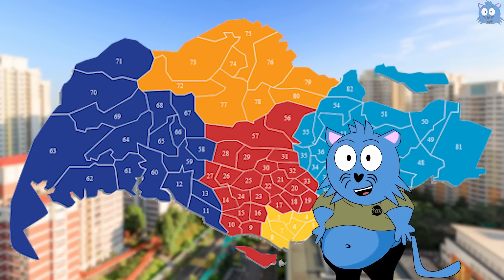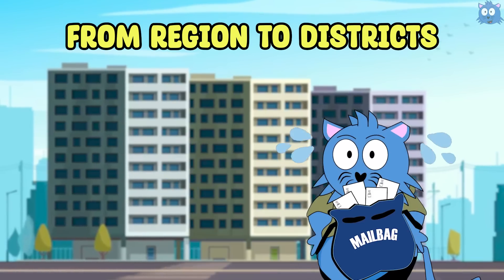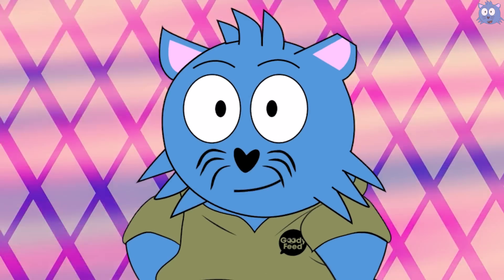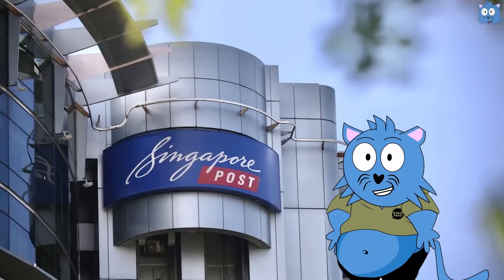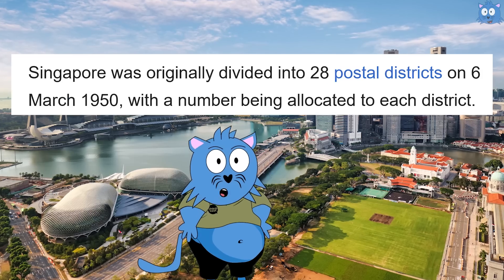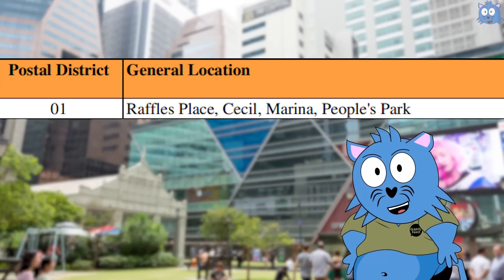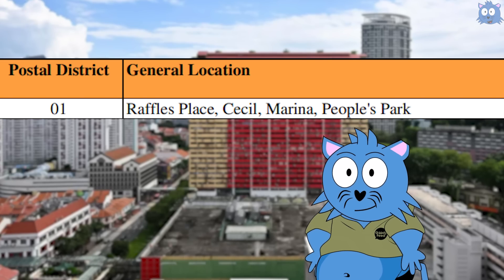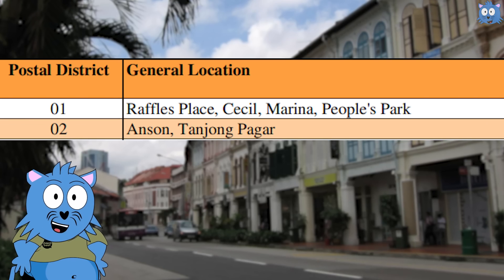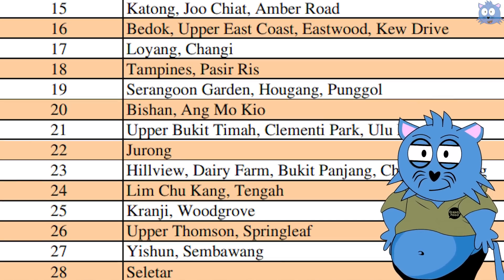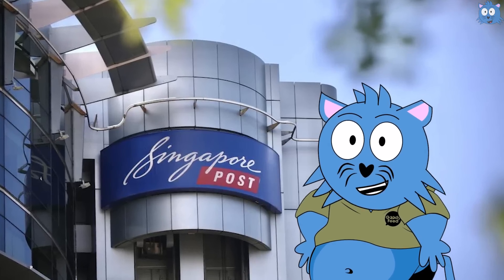Before you understand postal code, you need to understand the history behind it. Long long ago, back in 1950, to facilitate the postal service to send mail, Singapore was divided into 28 districts. District 1 is Raffles Place, Chinatown, Marina, and People's Park area. District 2 is Anson and Tanjong Pagar. It then goes all the way to District 28. This is done so that the postal service will know where to sort the mail.